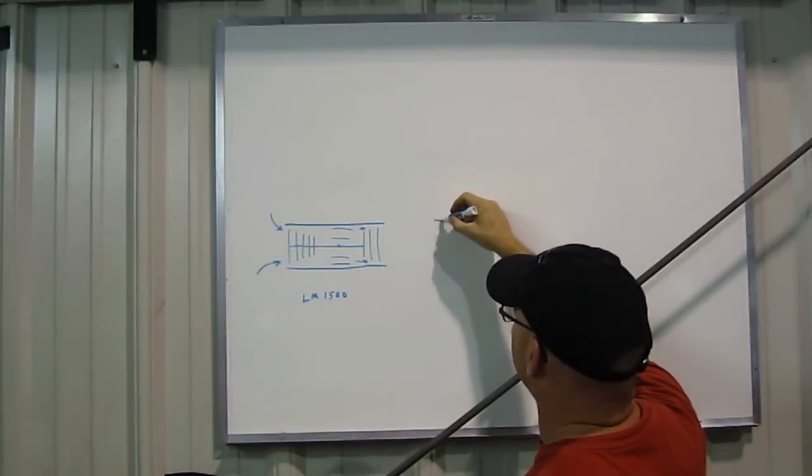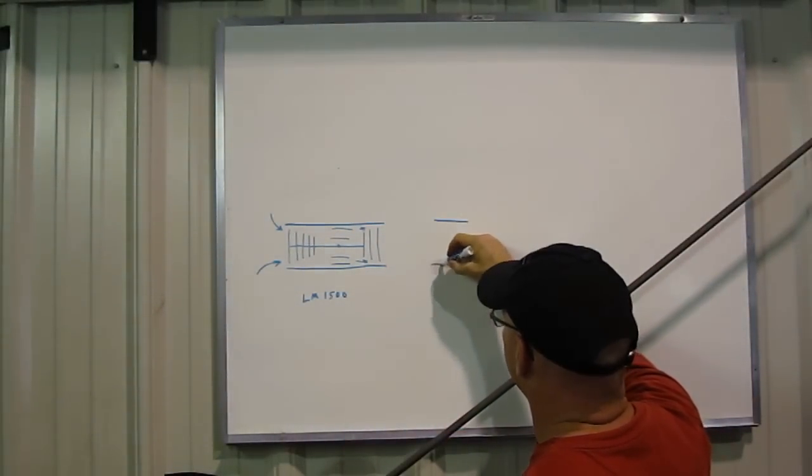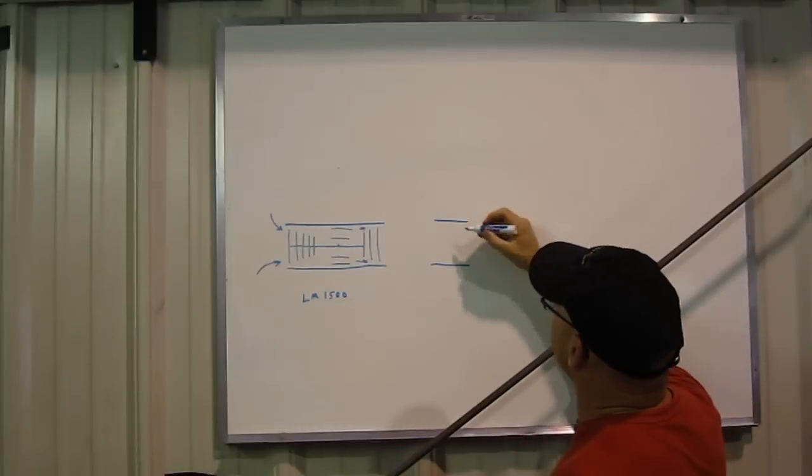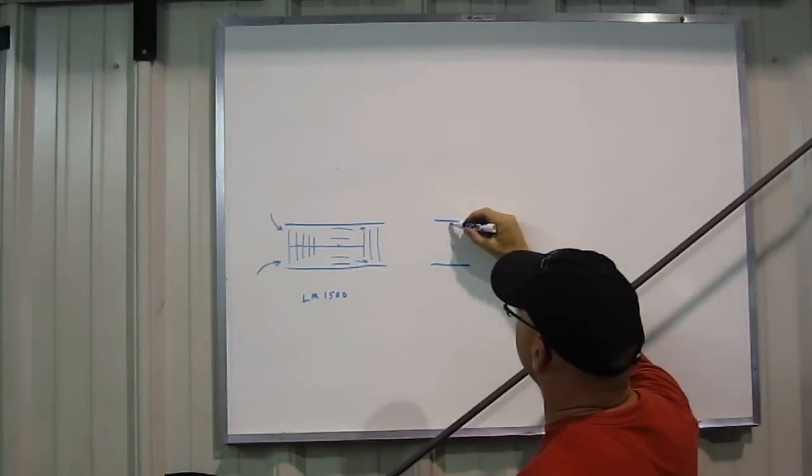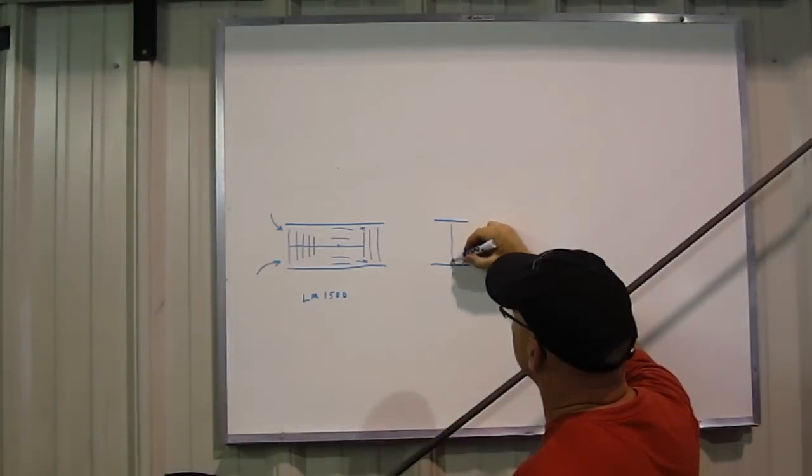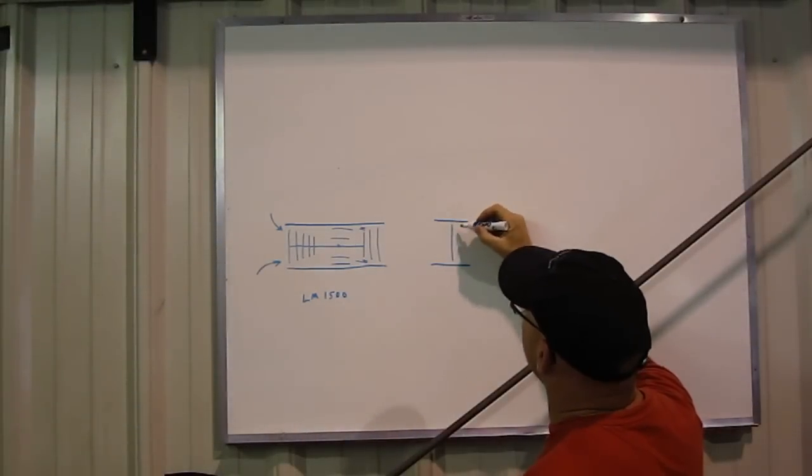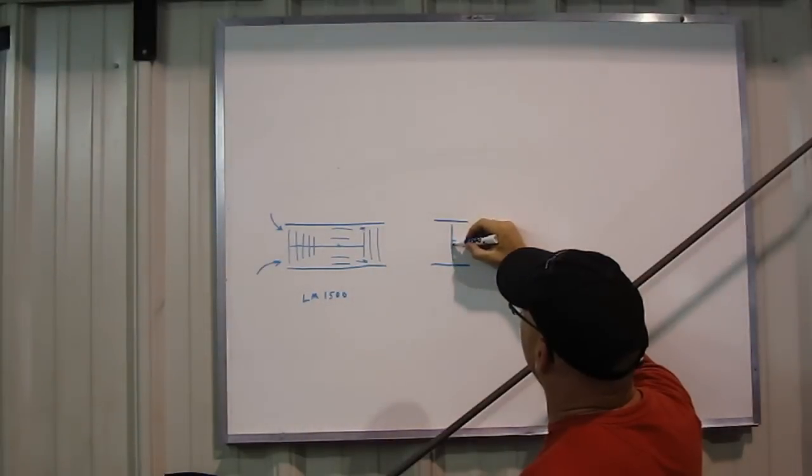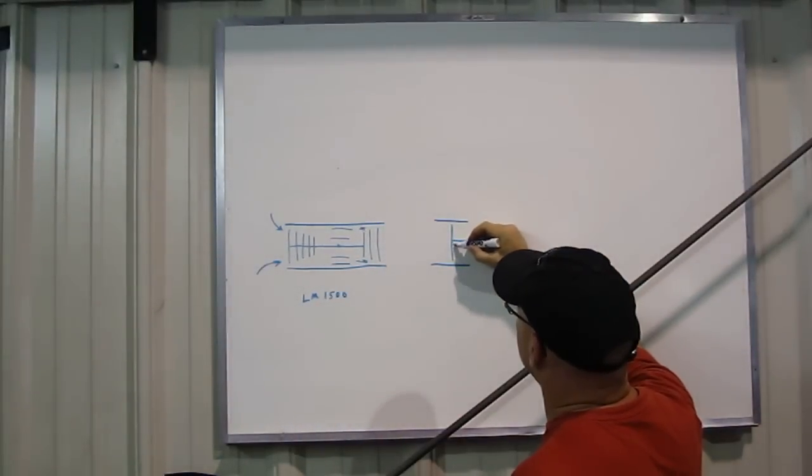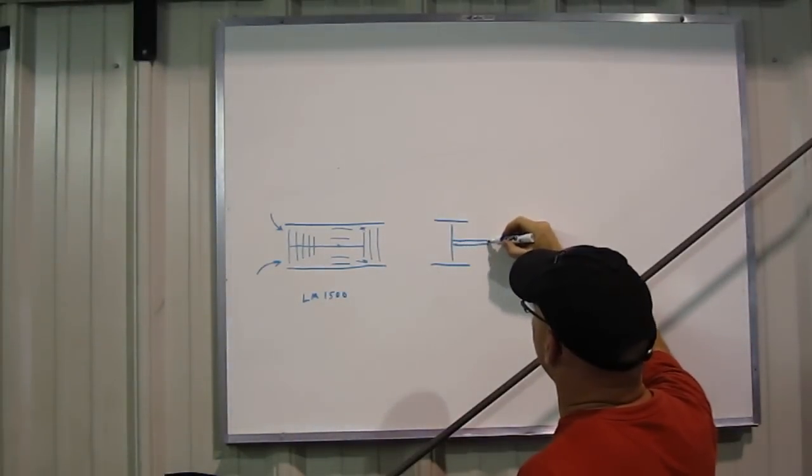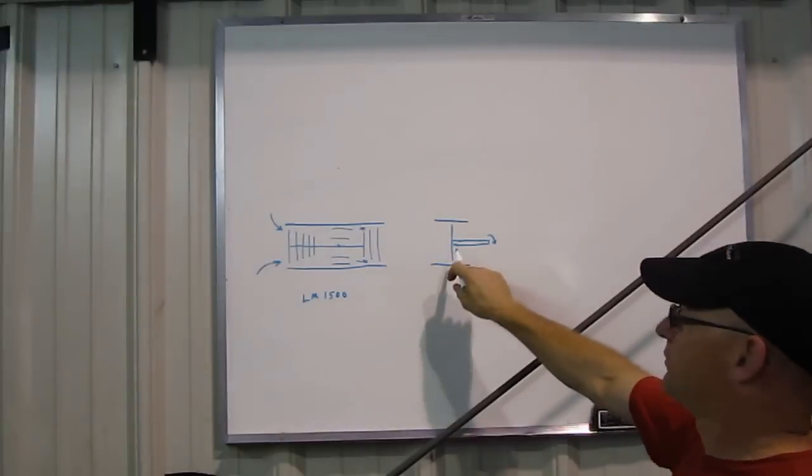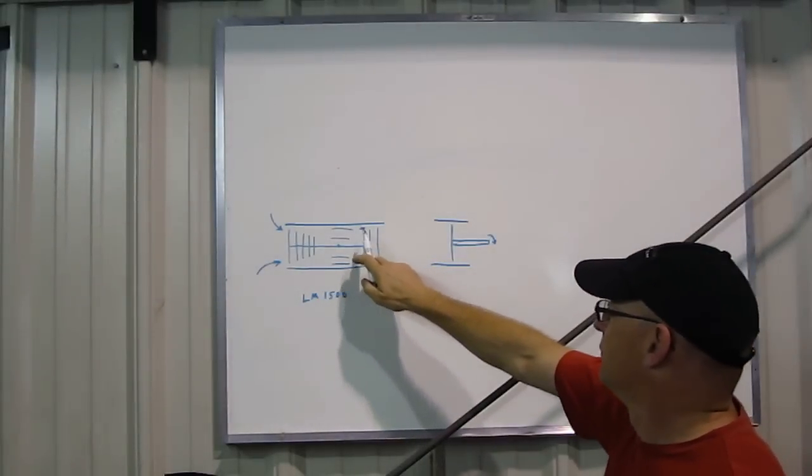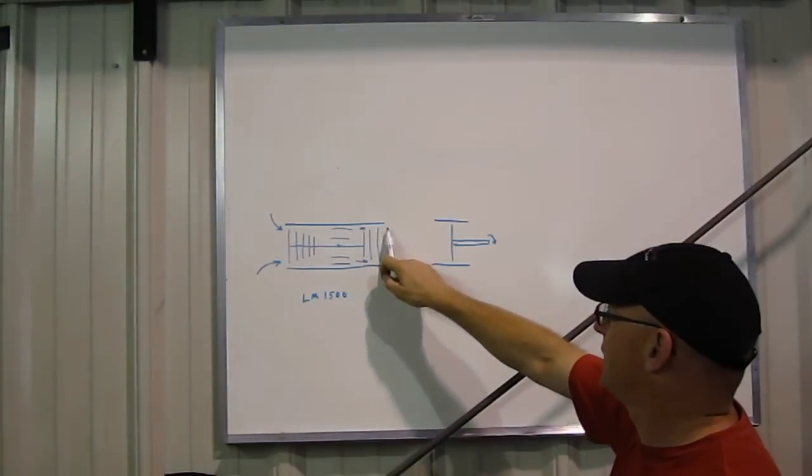The power turbine is right there, and it's got either one or two stages. I'm going to draw a single stage for simplicity here. It's got a great big shaft coming out of it. Now this shaft has a great deal of torque on it.